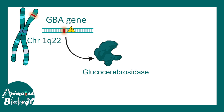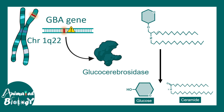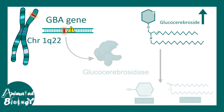In general, the glucocerebrosidase enzyme breaks down glucocerebroside into glucose and ceramides. This breakdown doesn't happen due to the gene mutation, and that is the key cause of Gaucher disease.